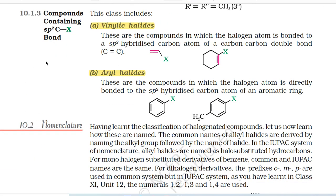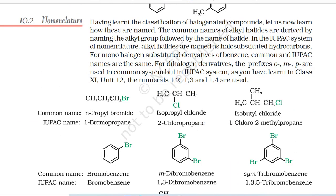10.1.3 Compounds containing sp2–carbon halogen bond. This class includes: A. Vinylic halides: compounds in which the halogen atom is bonded to an sp2-hybridized carbon atom of a carbon-carbon double bond. B. Aryl halides: compounds in which the halogen atom is directly bonded to the sp2-hybridized carbon atom of an aromatic ring.